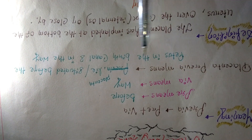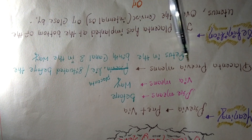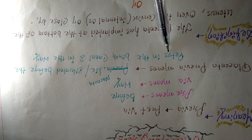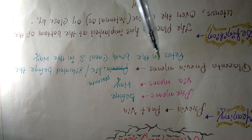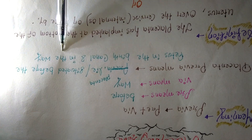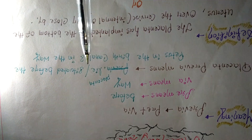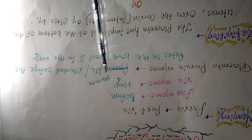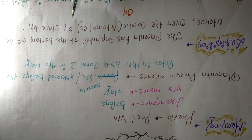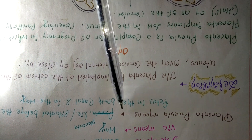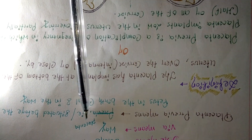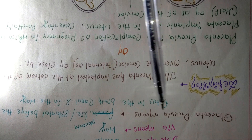In a normal pregnancy, the fetus should be situated just behind the birth canal, with the placenta behind the fetus — not before it. In placenta previa, the placenta lies or is situated before the fetus, blocking the birth canal. This condition is called placenta previa.